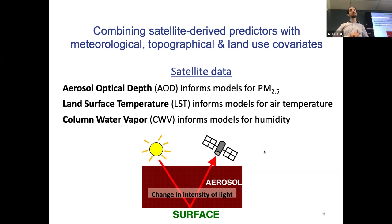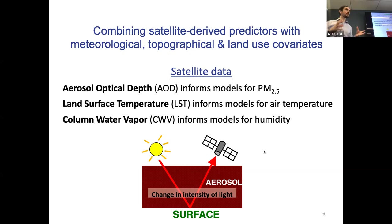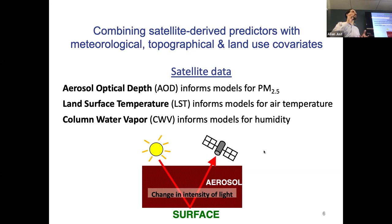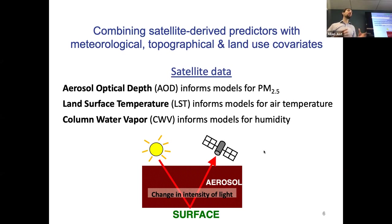A third parameter we're very interested in is column water vapor — the amount of water that would precipitate out. That uses principles of spectroscopy, where these satellites have sensors that look for absorption in very specific wavelengths of the electromagnetic spectrum that relate to water. Because of the intense interest in meteorologic applications, satellites are very good at quantifying water vapor, and we see opportunities to think about the relation of humidity and human health.